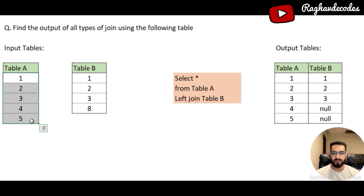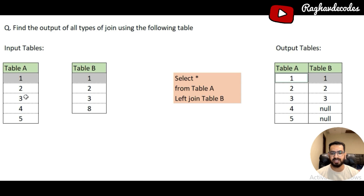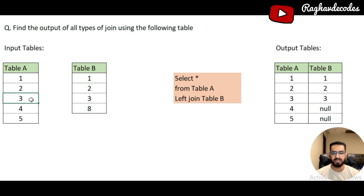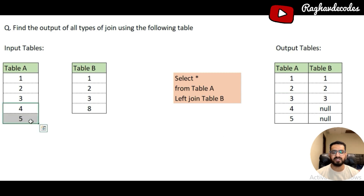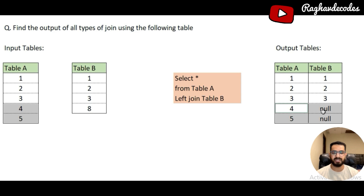According to the definition of left join, all records of Table A will be reflected in the output, and only the matching records of Table B. So 1 from Table A joins with 1 from Table B, giving us 1 and 1 in the output. Similarly, 2 joins with 2, and 3 joins with 3. For 4 and 5 in the left table, there is no corresponding match in Table B, so they appear in the output with null values.